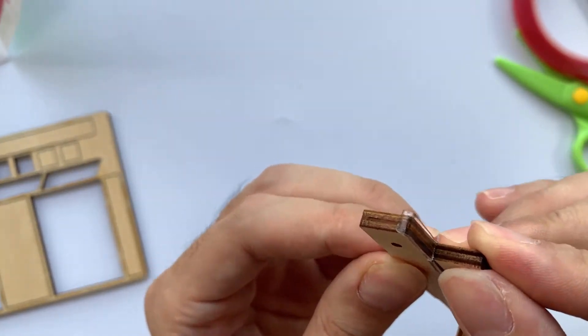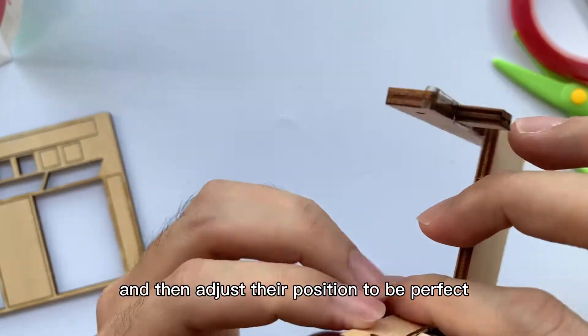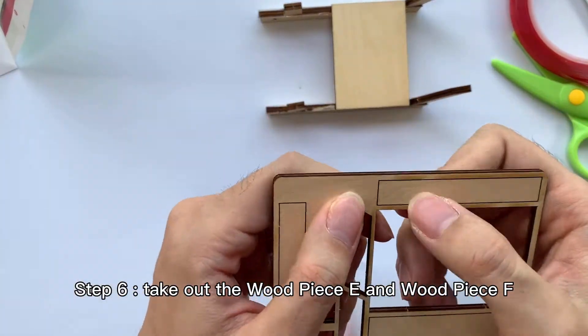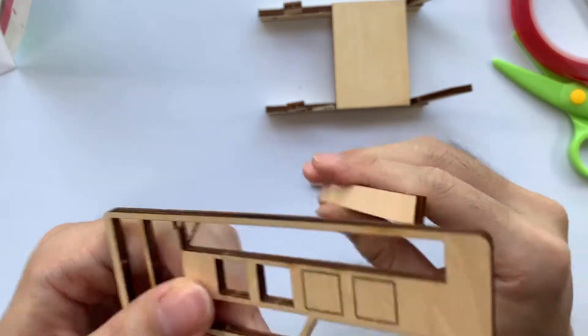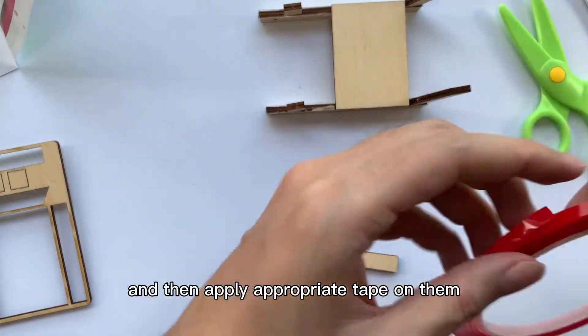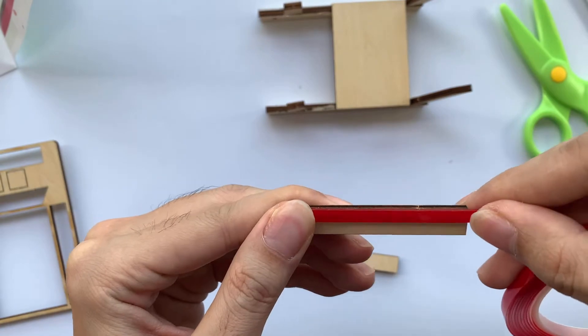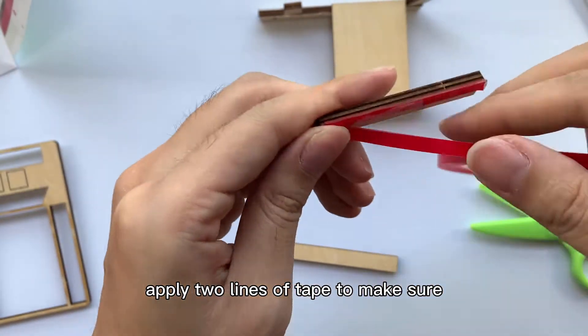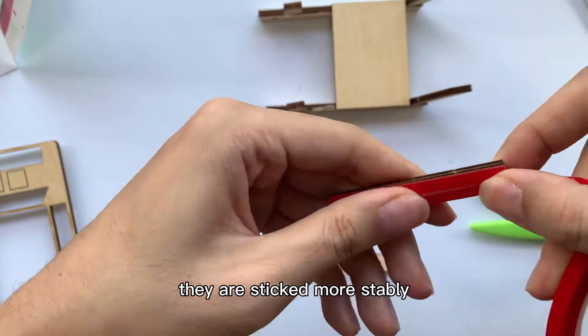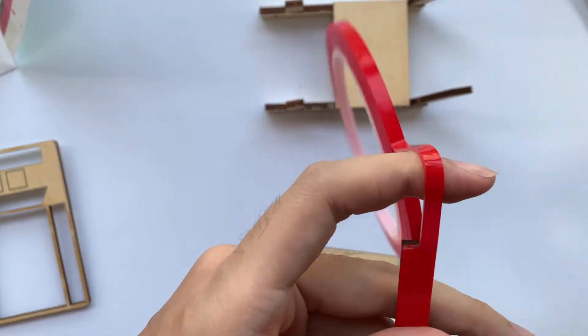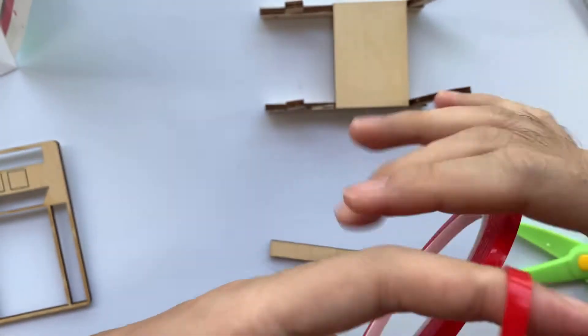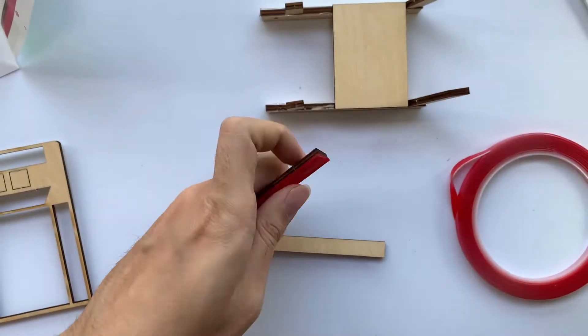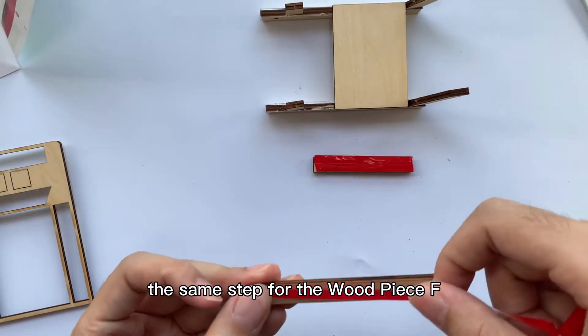Step 6: Take out the wood piece E and wood piece F, and then apply appropriate tape on them. Use the plastic-safe scissors to cut. Apply two lines of tape to make sure they are stuck more stately, and don't forget the excess part. The same step for the wood piece F.